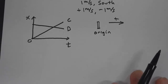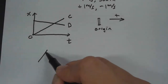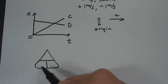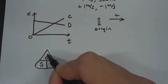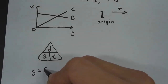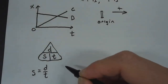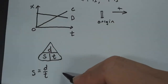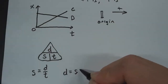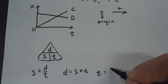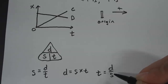To calculate speed, we have this triangle that we can use — some people find it helpful. It reminds us that speed equals distance divided by time. If you're looking for distance, cover the D: distance equals speed times time. If you're looking for time, cover the T: time equals distance divided by speed.